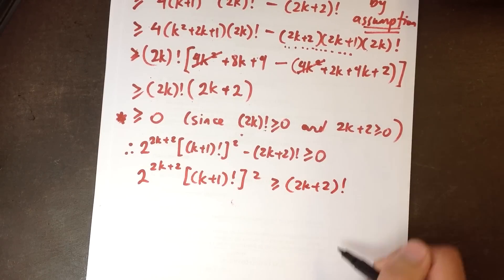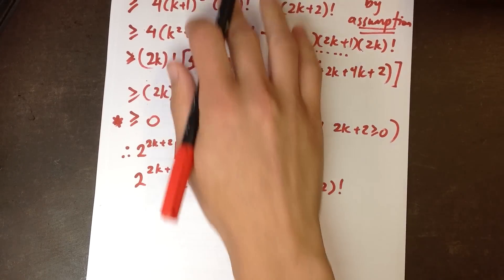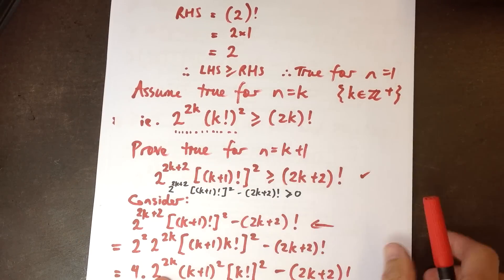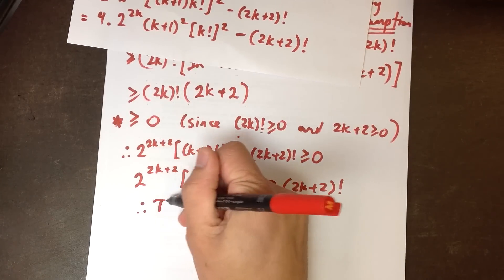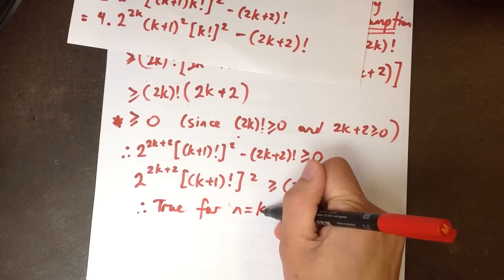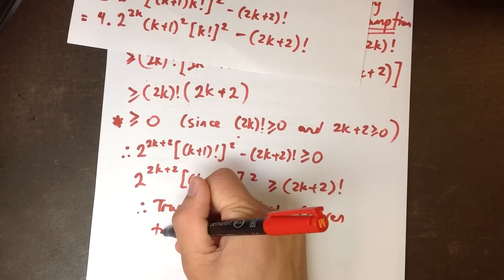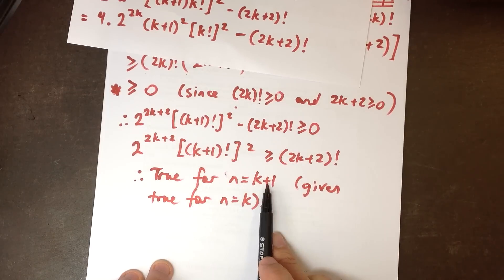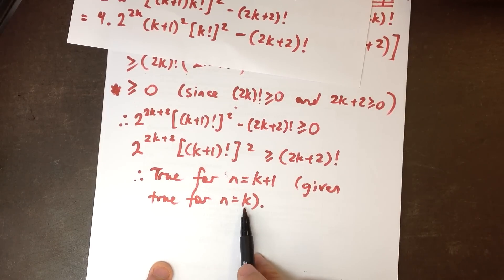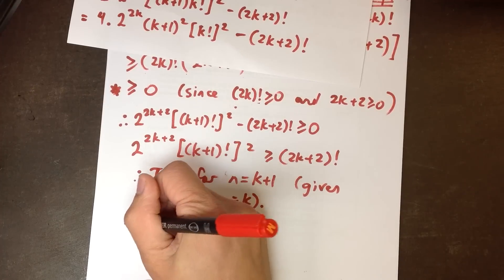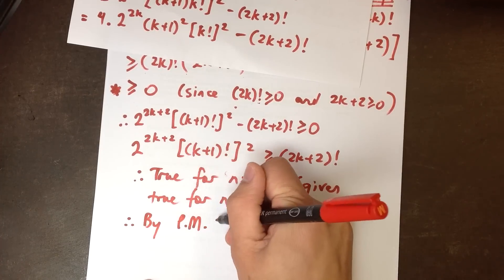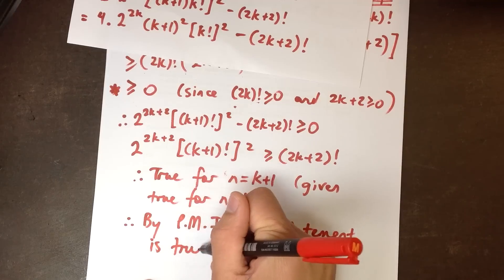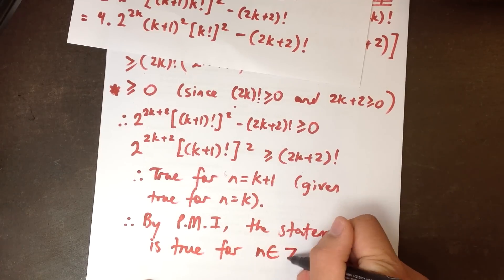That gives us 2 to the 2k plus 2 times k plus 1 factorial squared, greater than or equal to 2k plus 2 factorial. Going all the way back — that's what I was trying to prove, namely that the statement is true for n equals k plus 1. Therefore the statement is true for n equals k plus 1, given that it's true for n equals k. Since we proved it true for 1, the first allowable value, by the principle of mathematical induction the statement is true for all positive integers.